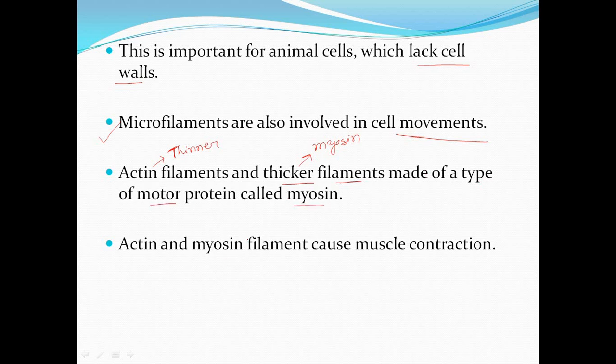Actin and myosin are two types of protein. They are motor proteins, meaning they are involved in contraction and movement. Actin and myosin filaments cause muscle contraction. These two types of filament are mainly involved in muscle contraction so that the body can move.